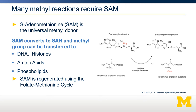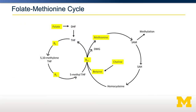This is done using something called the folate-methionine cycle. A schematic of the folate-methionine cycle is shown here. Every time you do a methylation reaction, SAM is converted into SAH, which is then converted into homocysteine, and then back to methionine, and then into S-adenosylmethionine. So as long as you can reconvert homocysteine back into S-adenosylmethionine, you'll have sufficient methyl groups. But if you can't recycle SAM, those methylation reactions will not be able to proceed effectively.